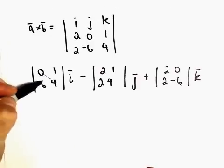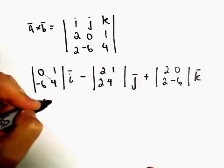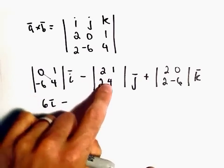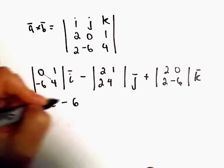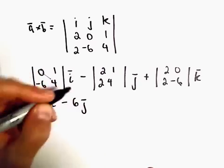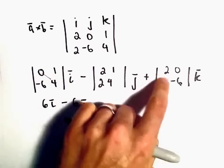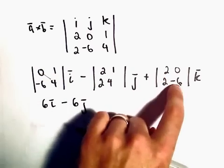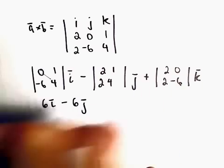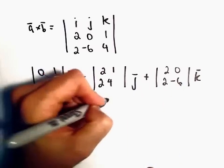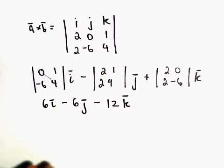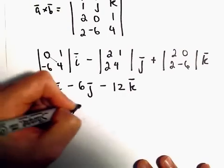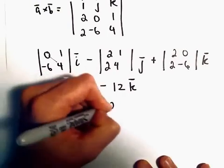So let's see, 0 minus negative 6. So that'll leave us with positive 6I. Minus, we'll have 2 times 4, which is 8 minus 2. So that'll leave us with a negative 6J. And then it looks like we have negative 12 minus 0. So negative 12 minus 0 is just going to leave us with negative 12 times K. So the cross product has components 6, negative 6, negative 12.